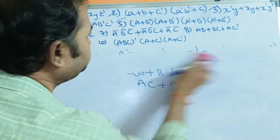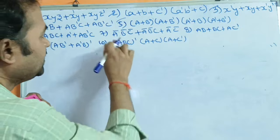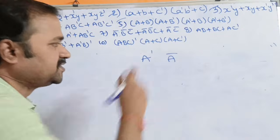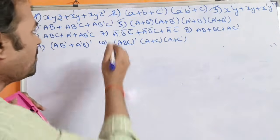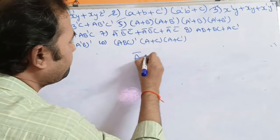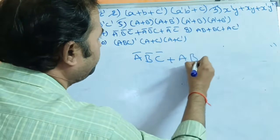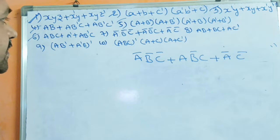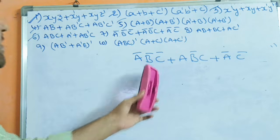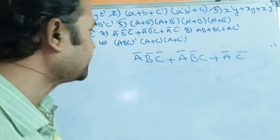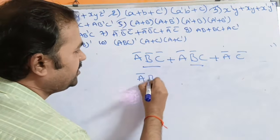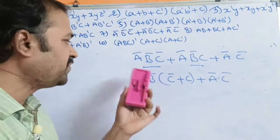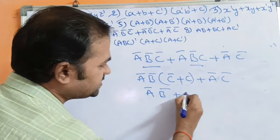Now let us see the seventh one. Note that dash and bar both represent complement — ā and a' are the same. The seventh example is: āb̄c̄ + āb̄c + āc̄. Observing the first two terms, āb̄ is common, giving āb̄(c̄ + c) = āb̄·1 = āb̄. So āb̄ + āc̄.